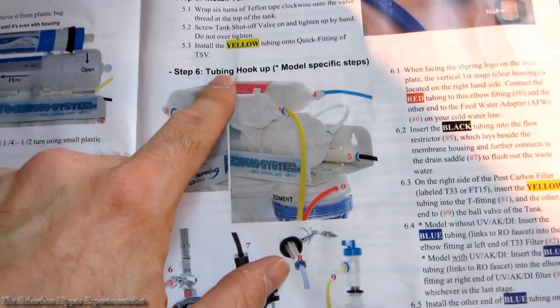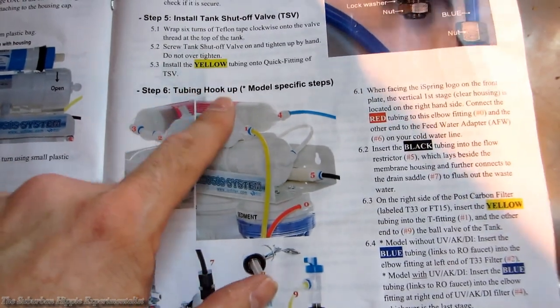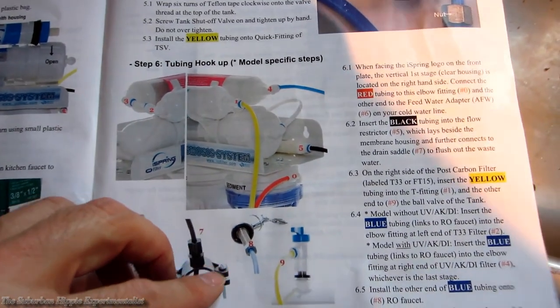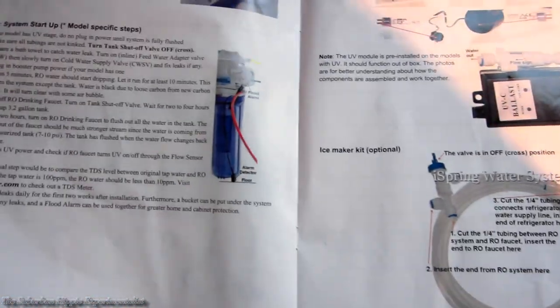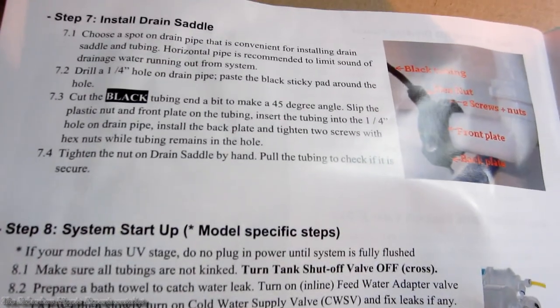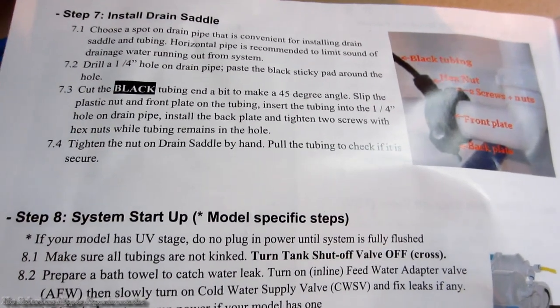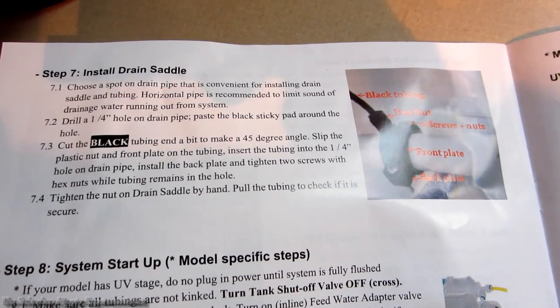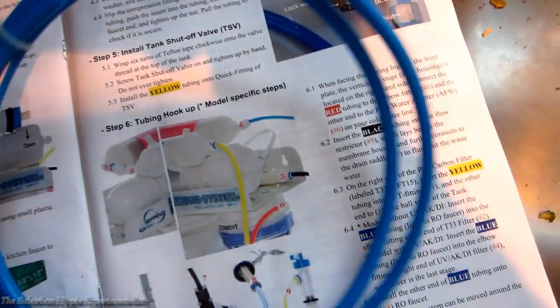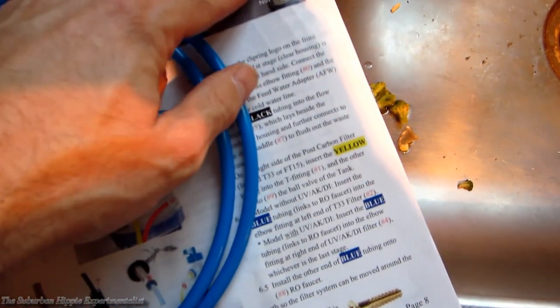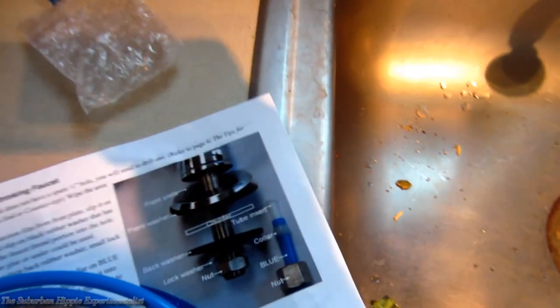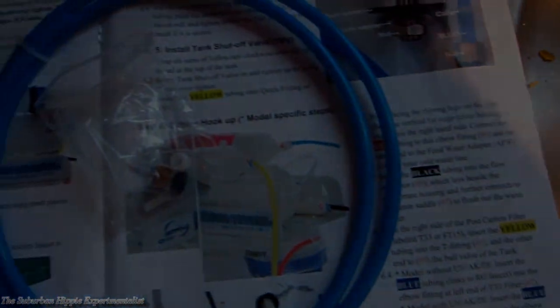Okay, the next step they have is a tubing hookup. I'm going to put everything in there before I do that step. And then after that we're going to install the drain saddle drain valve. I'm going to do that next before I fit everything in there. Then I'm going to install the tubing, then I'm going to go back to the tubing install, and then I'm going to start up the system. But meanwhile I never put this blue line on this faucet, this one right here. So I need to do that now. There's a couple fittings in here.